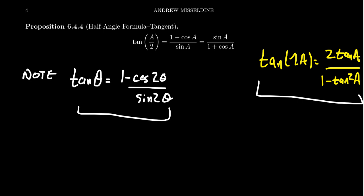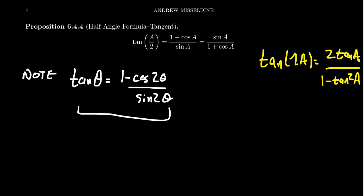It seems kind of interesting that these two would be connected, because the proof of this trigonometric identity actually doesn't use the double angle identity for tangent. We were being tricksy — we paired them together because of the connection that becomes more apparent with the half-angle identity.